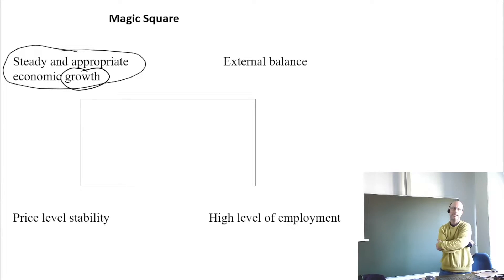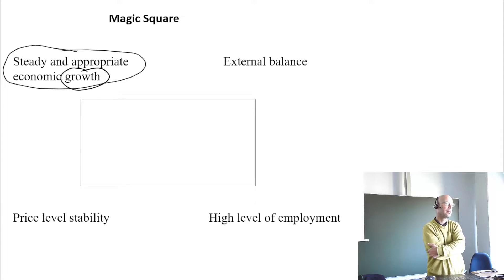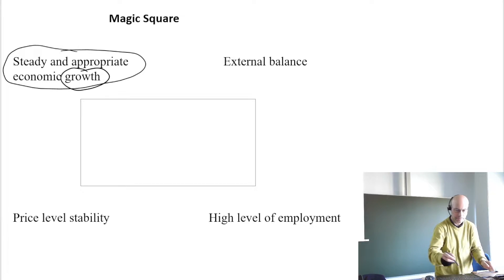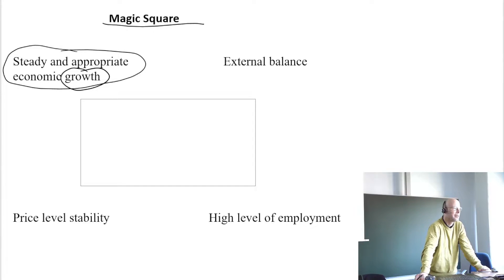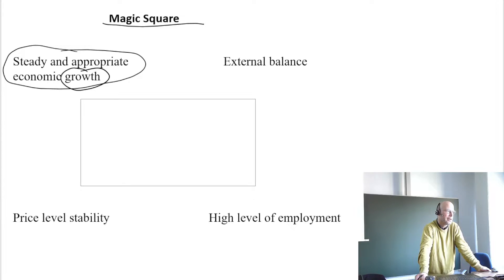We want now to come to economic aims. This is maybe something special in Germany because for this so-called magic square, it's even written down in a law during the 1960s. But if you look at what should we do in some country to obtain a stable framework for a good living, you find more or less always a few standard aims.